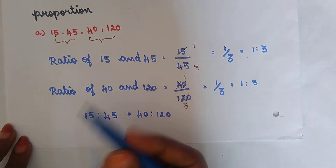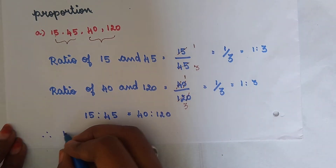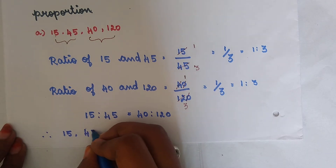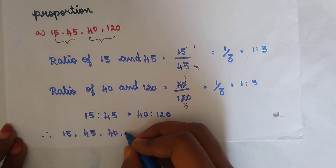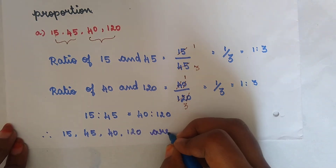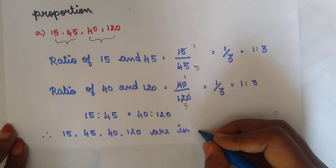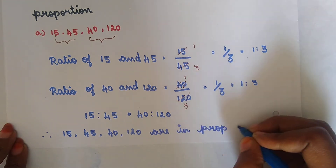Therefore, 15, 45, 40 and 120 are in proportion. This is our answer.